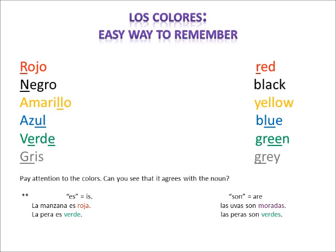Los colores — in this section I'm going to show you an easy way to remember the colors in Spanish by associating the color in English with the color in Spanish. The first color is rojo. What color in English starts with the letter R? Red. Rojo — red. The next one is negro. When you think about negro, think about the night — when it's night, it's dark, it's black. Negro — black.